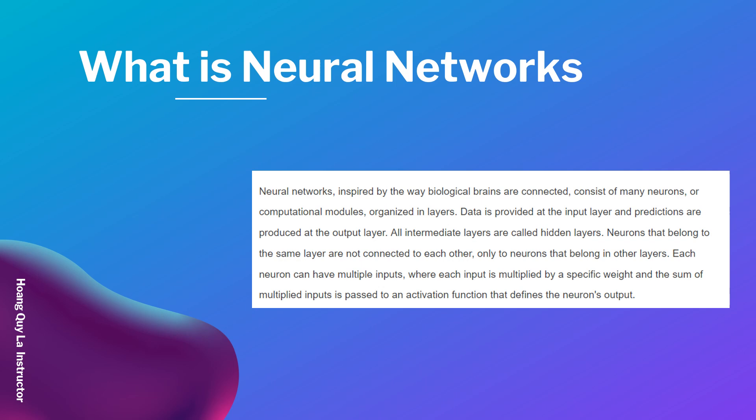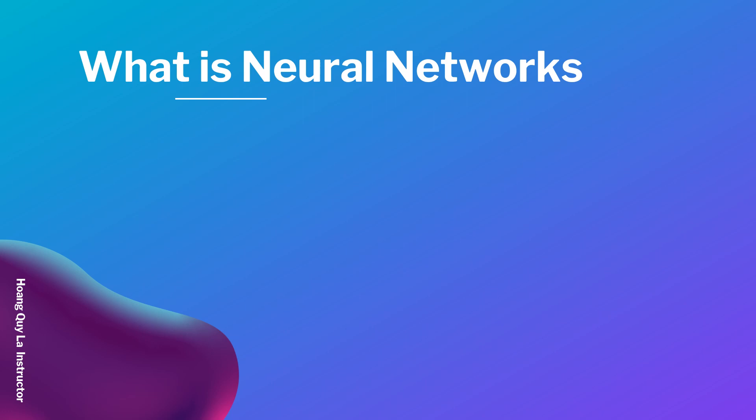All intermediate layers are called hidden layers. Neurons that belong to the same layer are connected to each other. Each neuron can have multiple inputs, where each input is multiplied by a specific weight, and the sum of the multiplied inputs is passed to an activation function.